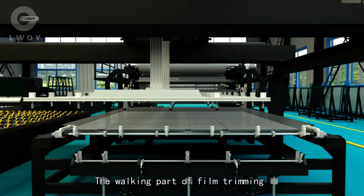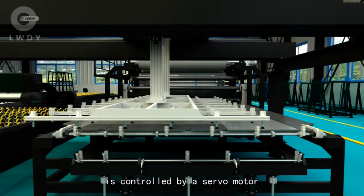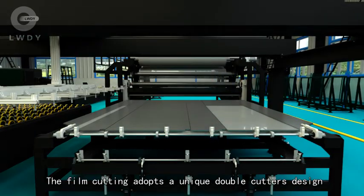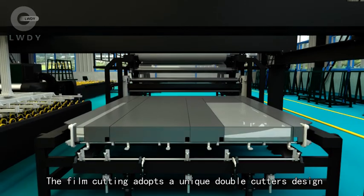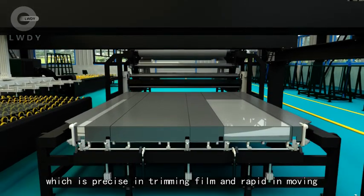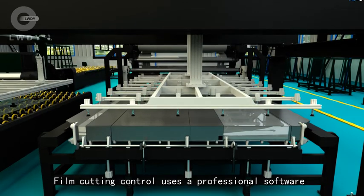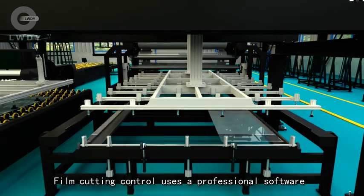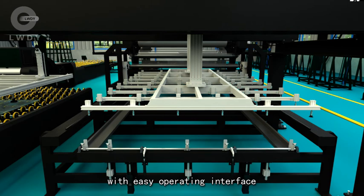The working part of film trimming is controlled by a servo motor. The film cutting adopts a unique double cutter design, which is precise in trimming film and rapid in moving. The film cutting control uses professional software with easy operating interface.